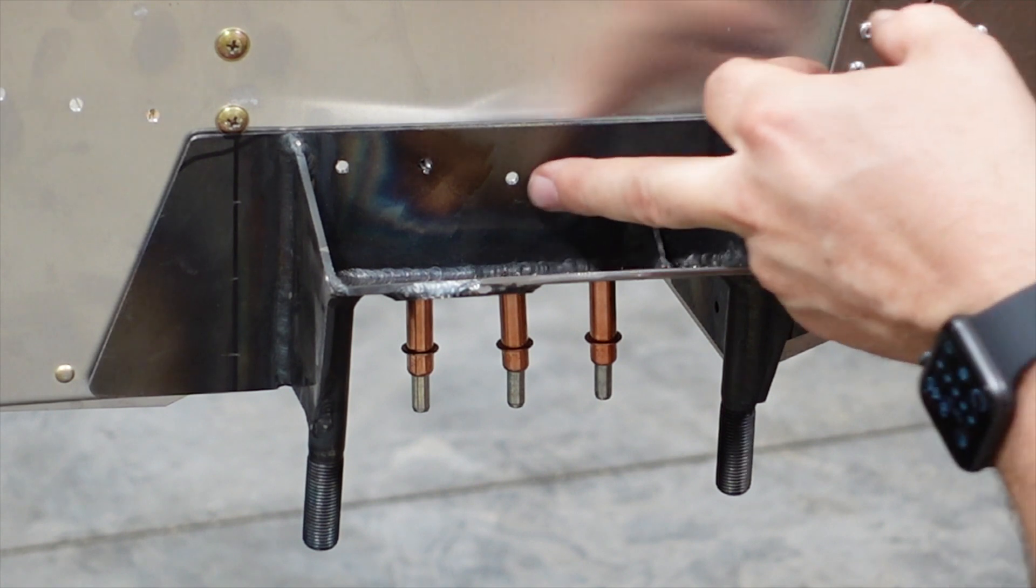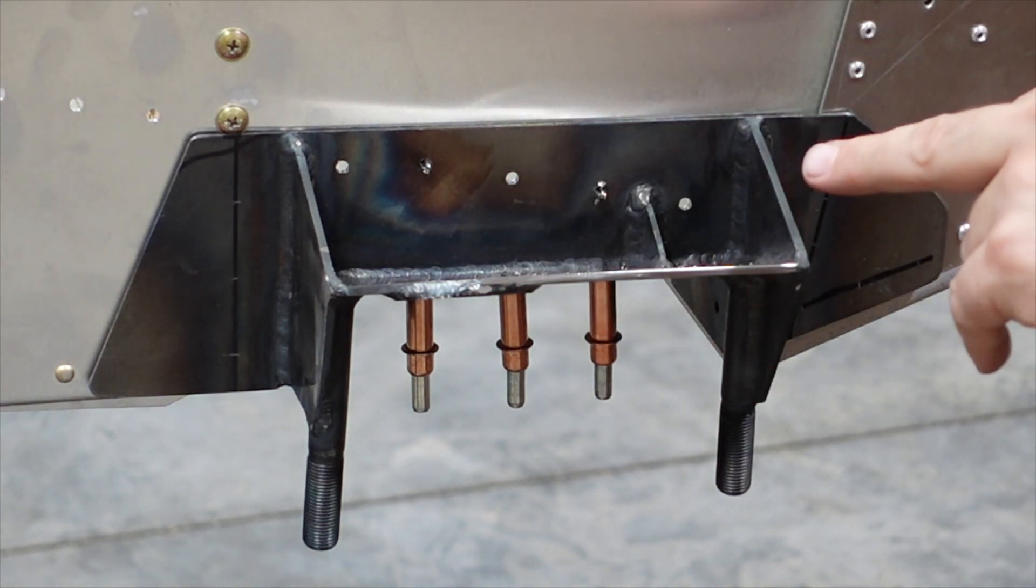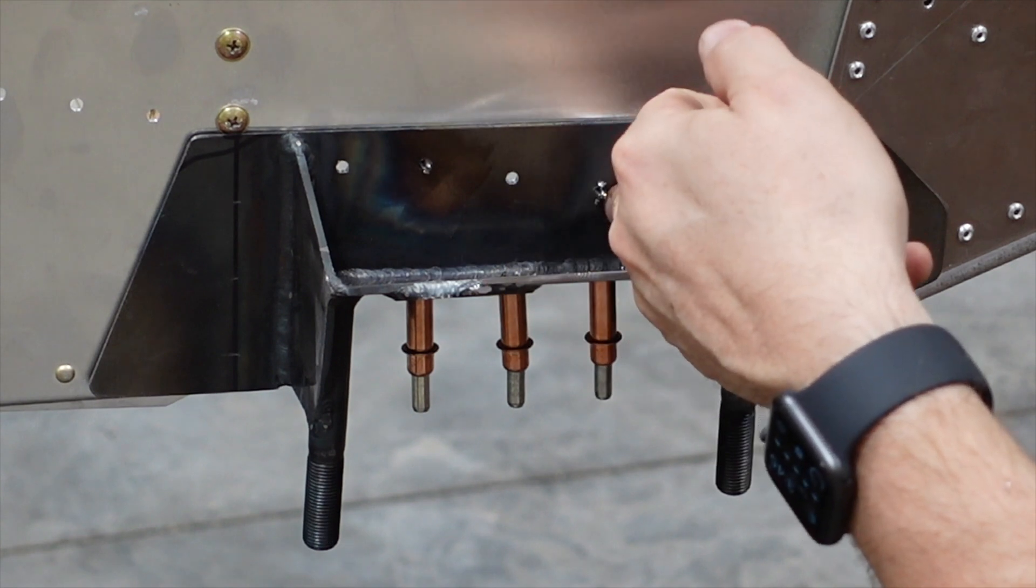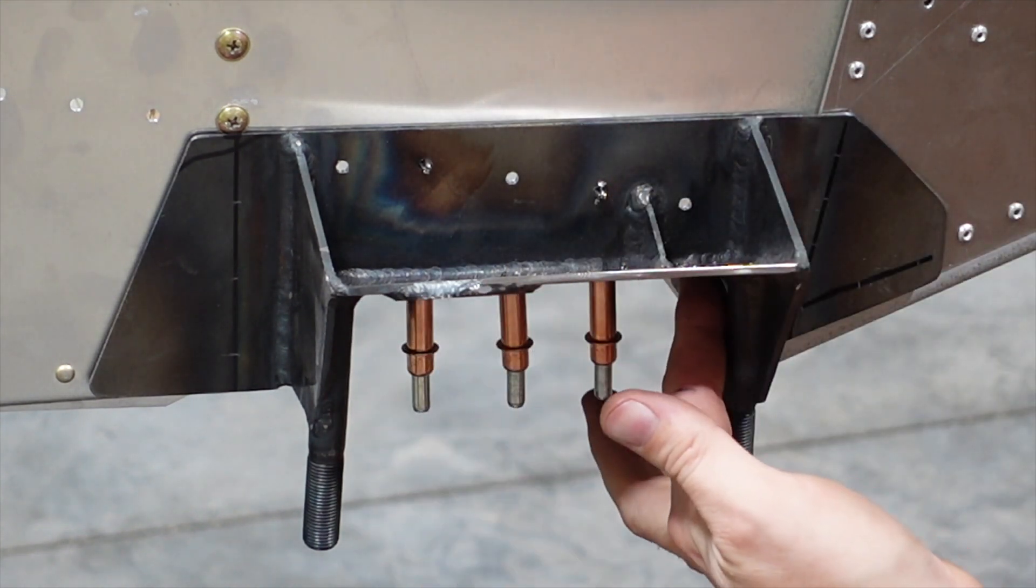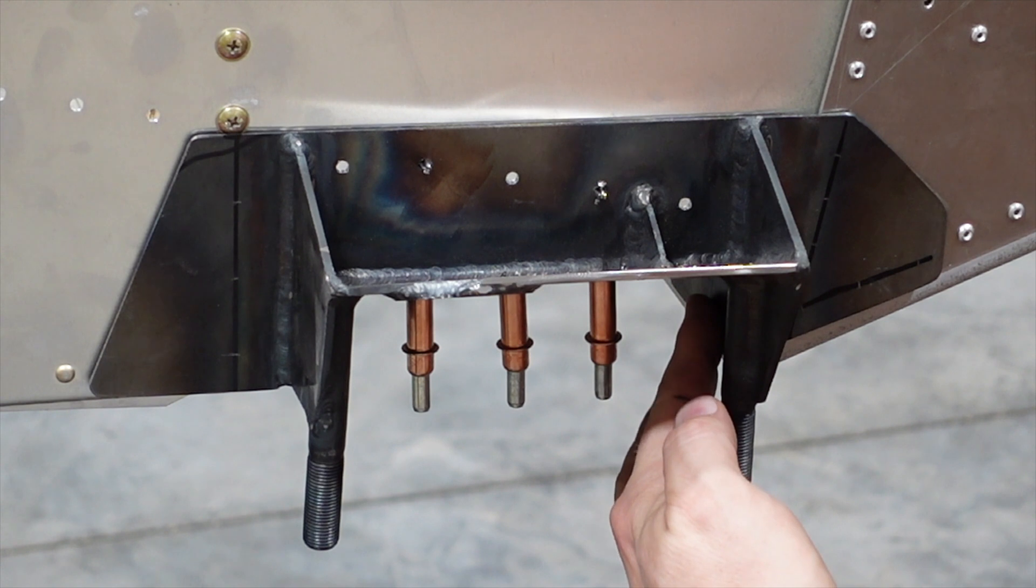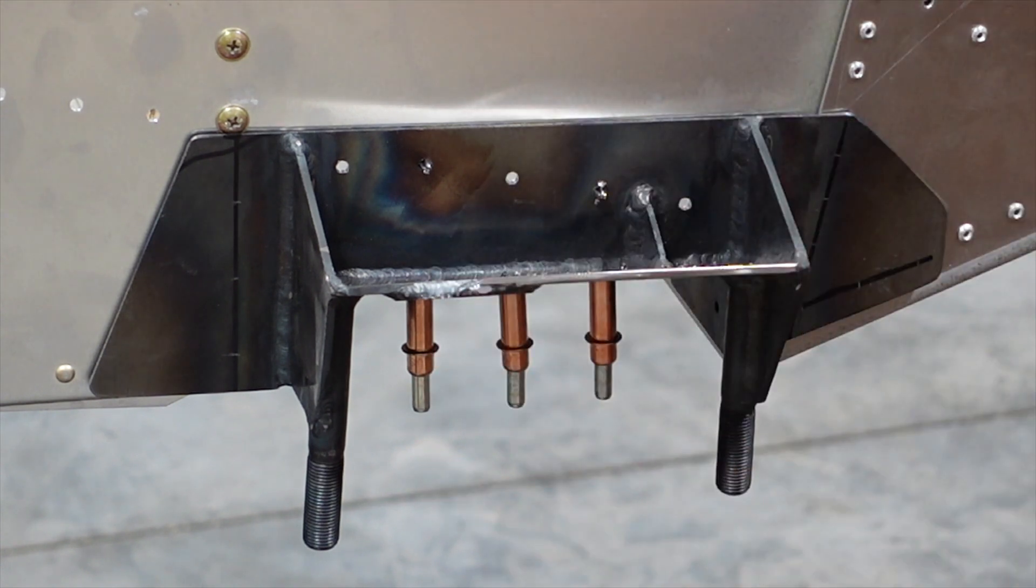Basically I had to line up all the holes for the A5 rivets in the rear and the hardware in the front, as well as the channel on the bottom there. That's all going to have to be lined up and opened up for either rivets or bolts depending on what the plans call for.